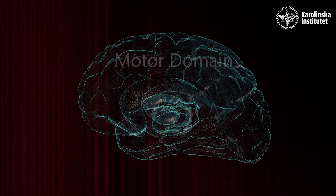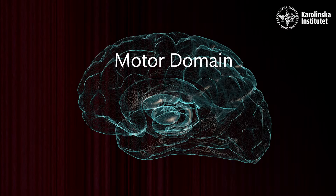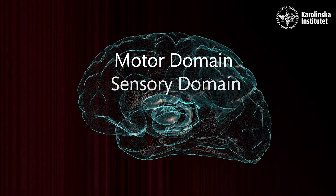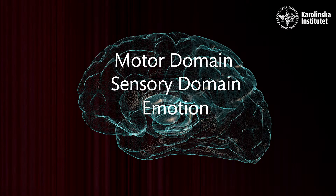A traditional way of organizing the brain functions is to group them into a few discrete functional domains. The list is quite intuitive: the motor domain, the sensory domain, emotion, and cognition.